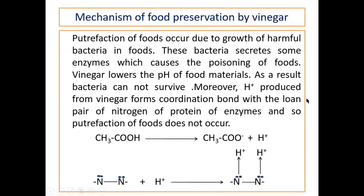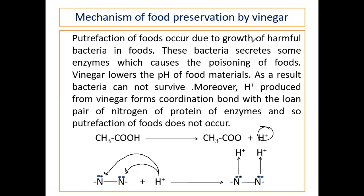This is the mechanism of food preservation by vinegar. Putrefaction of food occurs due to growth of harmful bacteria in food. These bacteria secrete some enzymes which cause the poisoning of food. Vinegar lowers the pH of the food materials; as a result, bacteria cannot survive. Moreover, hydrogen ions produced from vinegar form a coordinate bond with the lone pair of nitrogen in the protein of enzymes, destroying the catalytic capacity of the enzyme, and food remains in a safe condition.